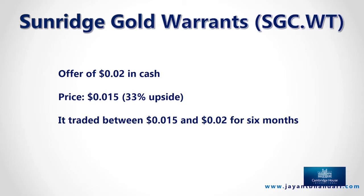Sunridge also had warrants trading in the stock market. The company's news release had said they would pay two cents for each warrant. You could buy the warrants at one and a half cents and instead of trying to get your cash back, you could place a sell order at two cents for these warrants. For a lot of investors there's not much difference between one and a half cents and two cents, but that's an arbitrage upside of 33%. I personally did about four or five rounds of transactions over a period of six months.